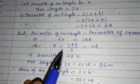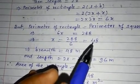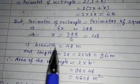And therefore x equal to 288 divided by 6, that is 48. So it means breadth equal to 48 meter and length equal to 2x, that is 2 into 48, 96 meter.